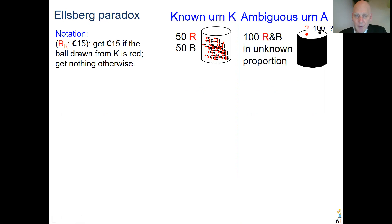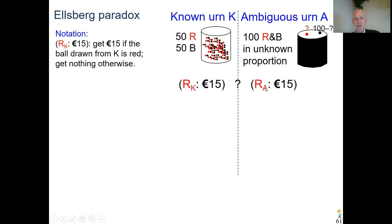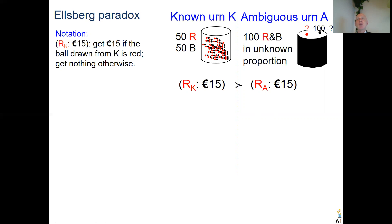The notation is similar for the other gambles. Now consider a choice presented in many experiments: imagine you can gamble on the color red from the known urn, or on red from the unknown ambiguous urn. The prize is always the same — 15 euro. Which of these two gambles would you rather have? Most people prefer to gamble on the known urn, where they know the probability, rather than the unknown ambiguous urn where they don't.